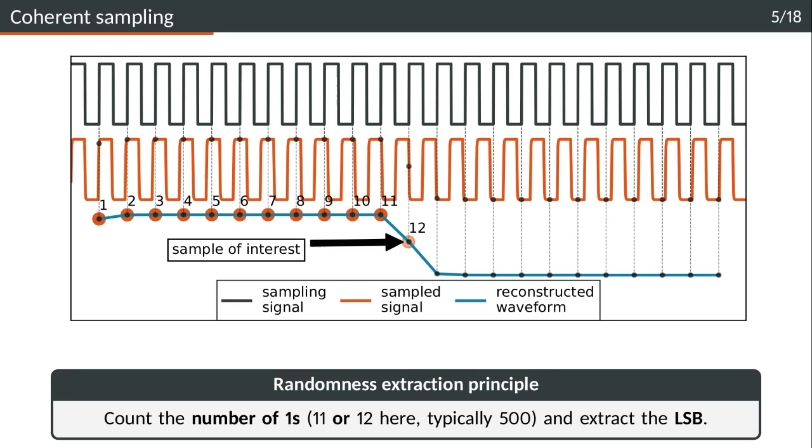The principle of the TRNG is to count the number of ones and this number of ones will vary depending on the clock jitter. Here we have 11 or 12 ones but typically we have around 500 of them. From this number of ones we extract the LSB to get a random bit.